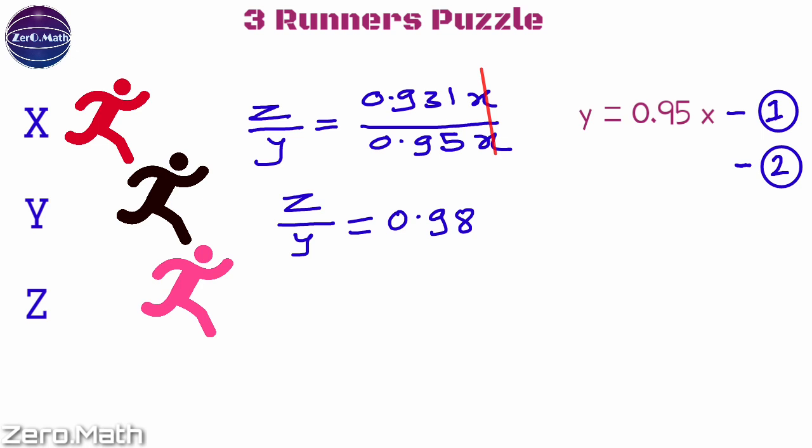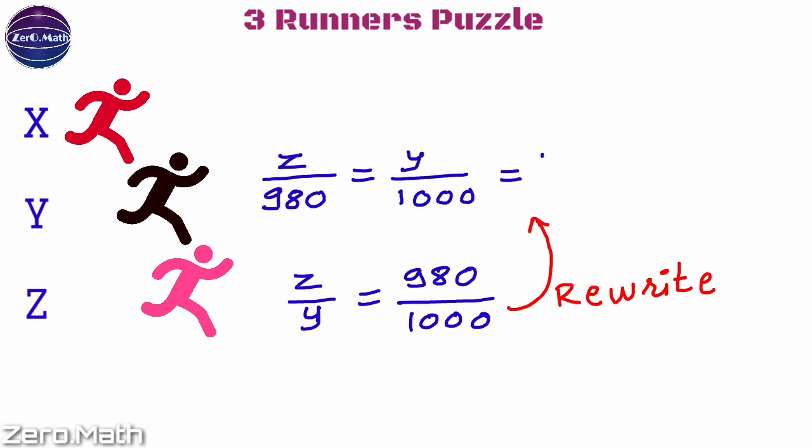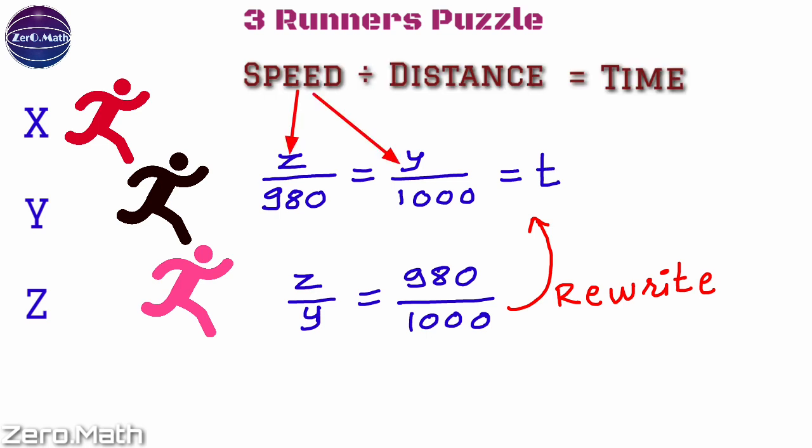Let's rewrite this equation in form of time t, where z and y are speeds and 980 and 1000 are distances covered. We can rewrite it as z/980 = y/1000 = t, that is the time taken.